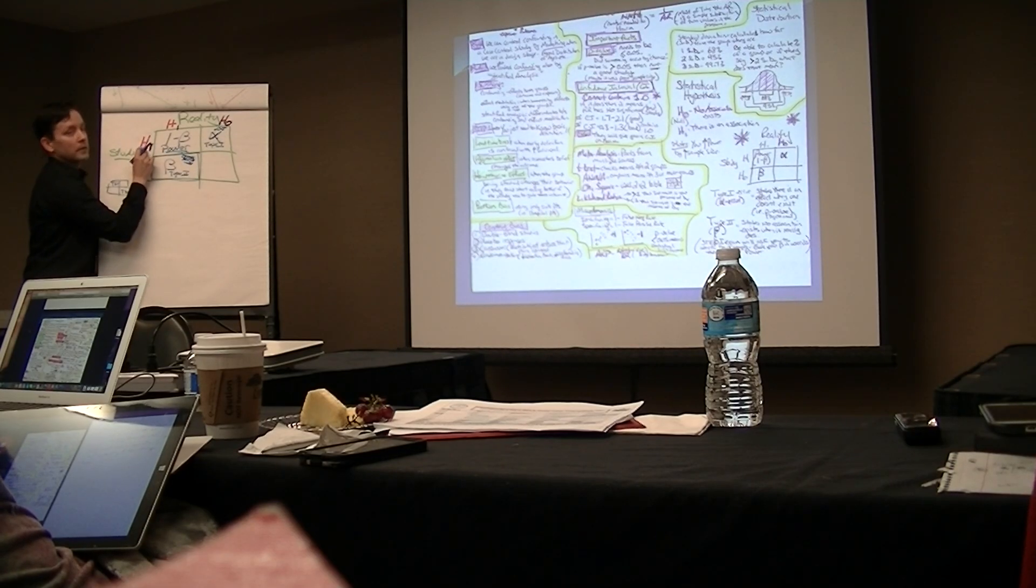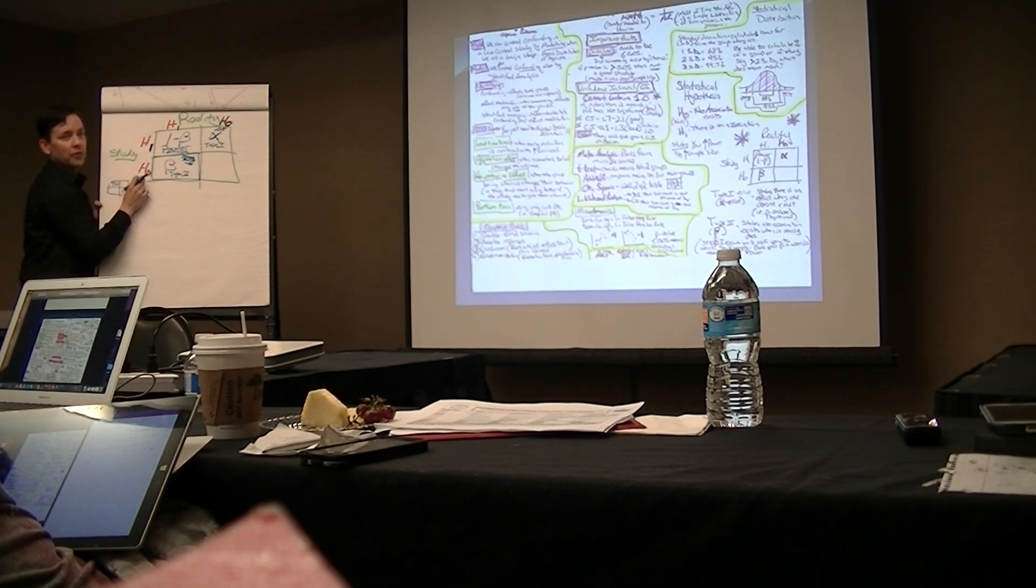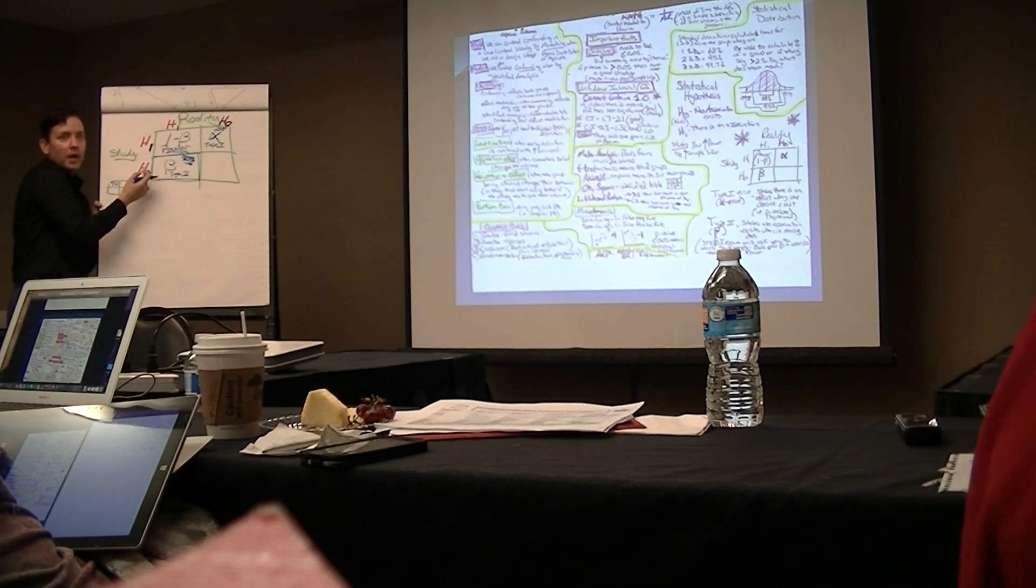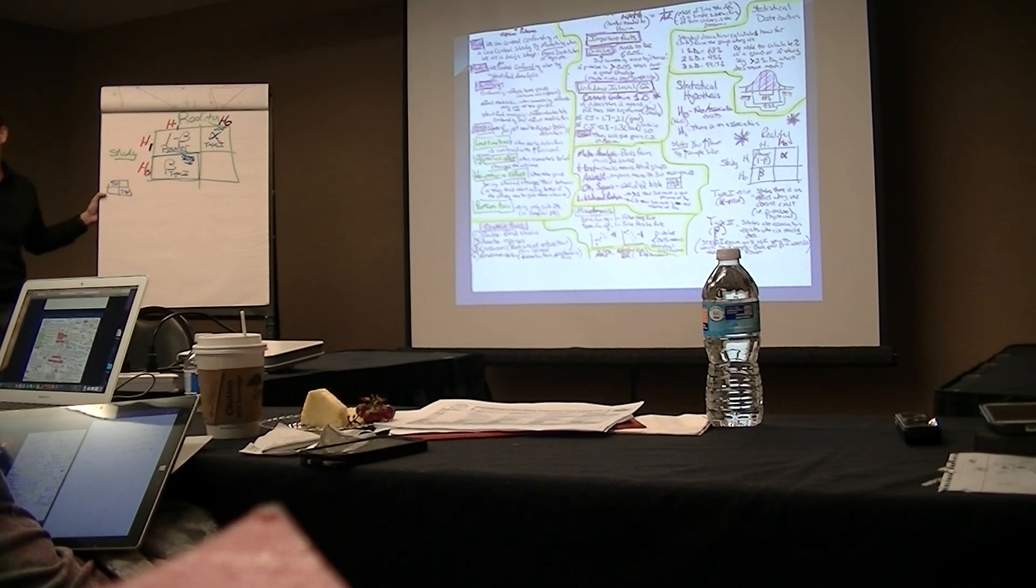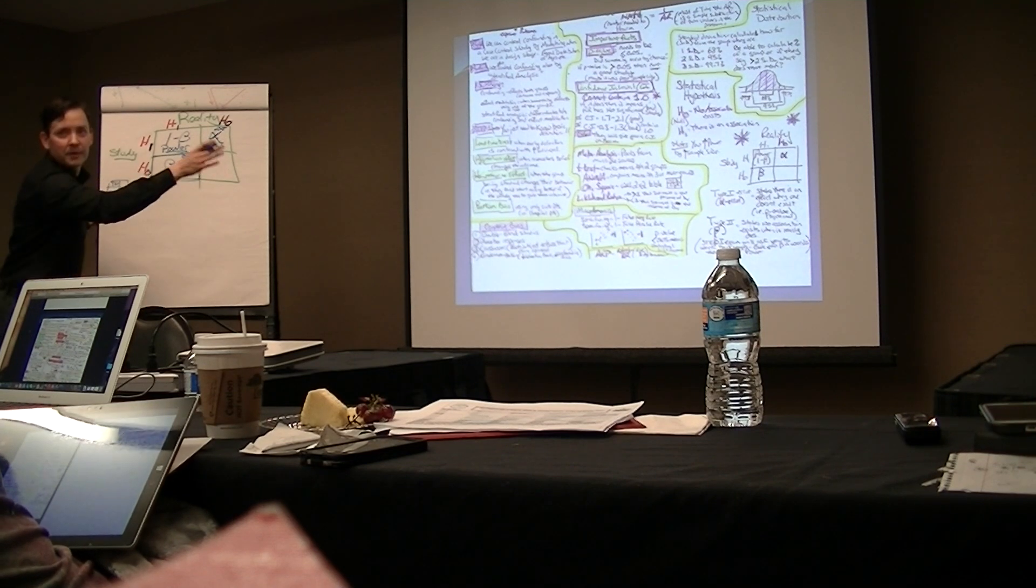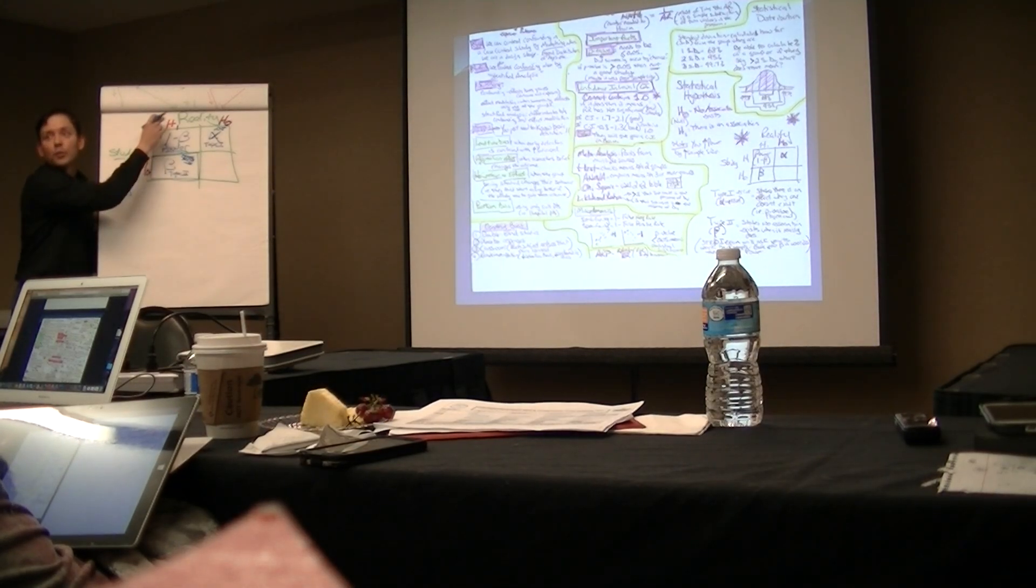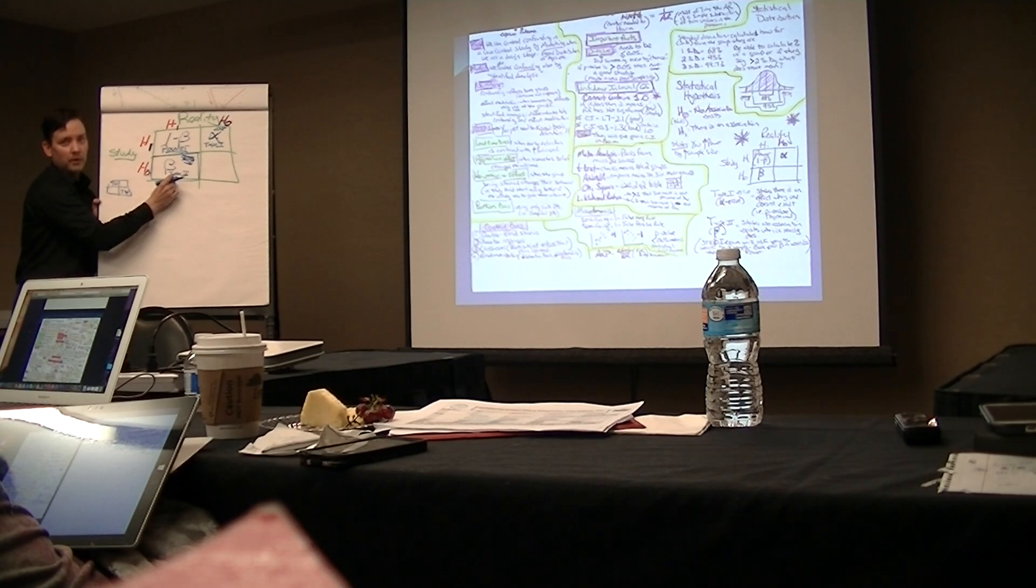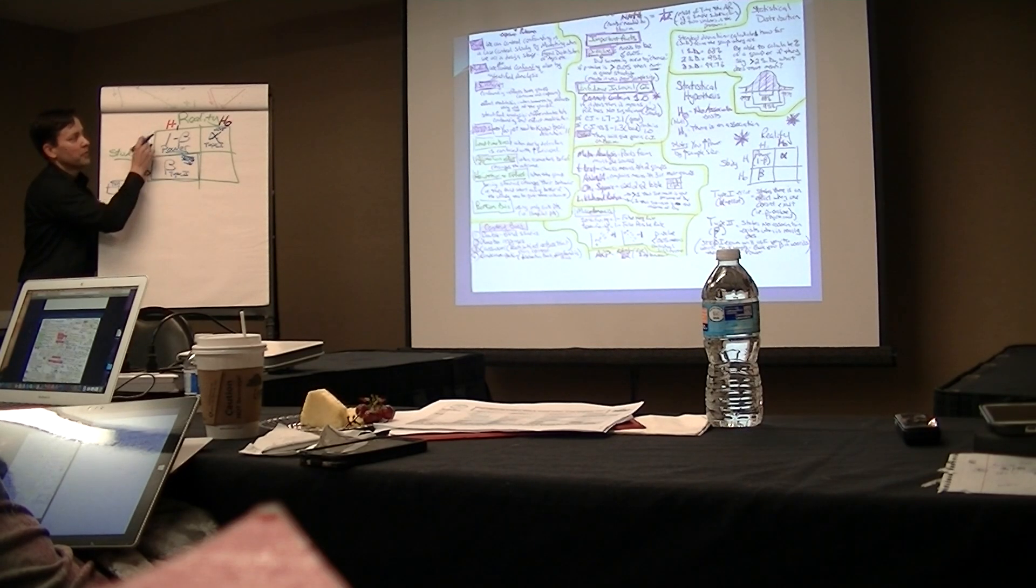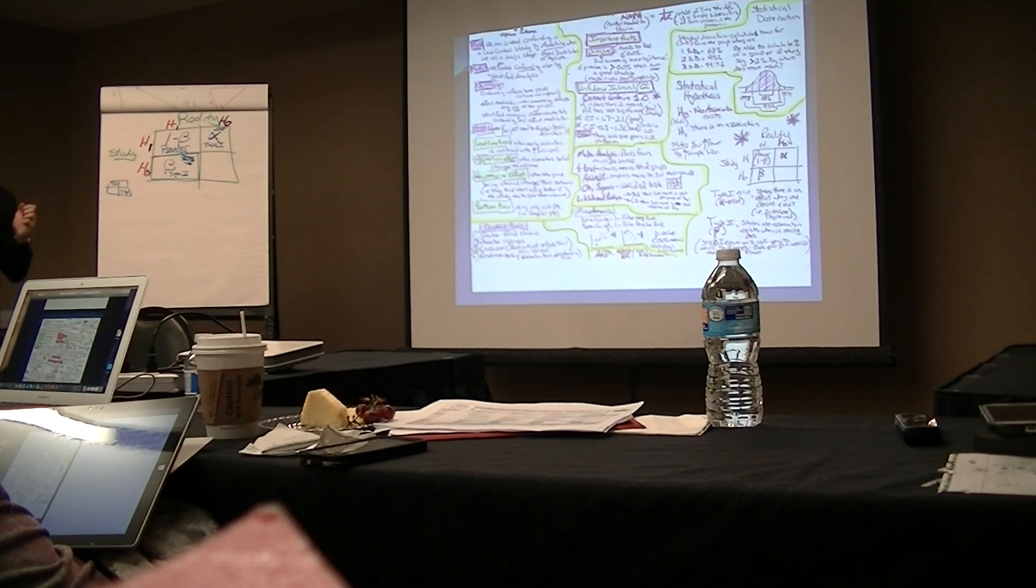The study says there's an association, in reality there was not, alpha error. The study says there's no association, but in reality there was one. So that's like a problem. Whatever study you did said it didn't happen, buddy, and the fact is it did happen, and someone got hurt because of it. So they like this box, that's why you're going to understand it in words. That's a beta type 2 error. And then this one says there is an association, that's 1 minus the beta, that gives me that number, that's called the power.